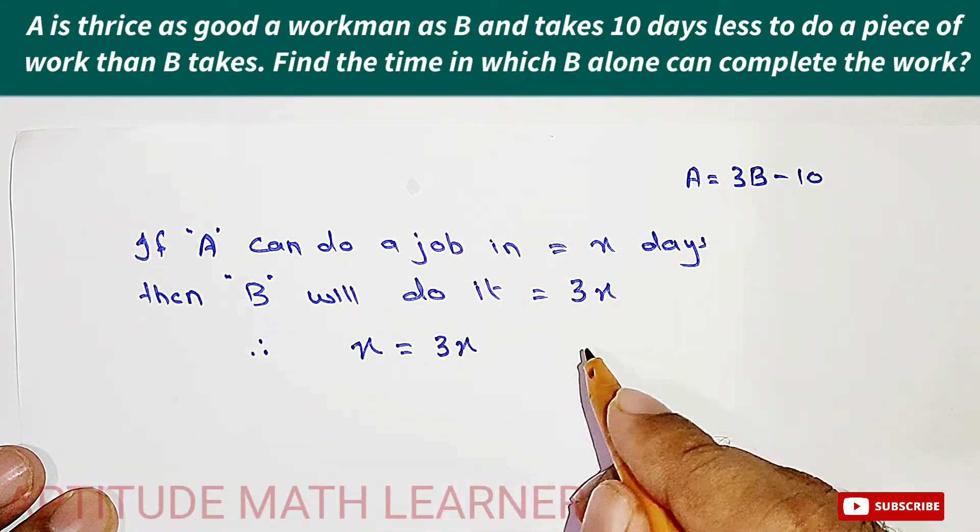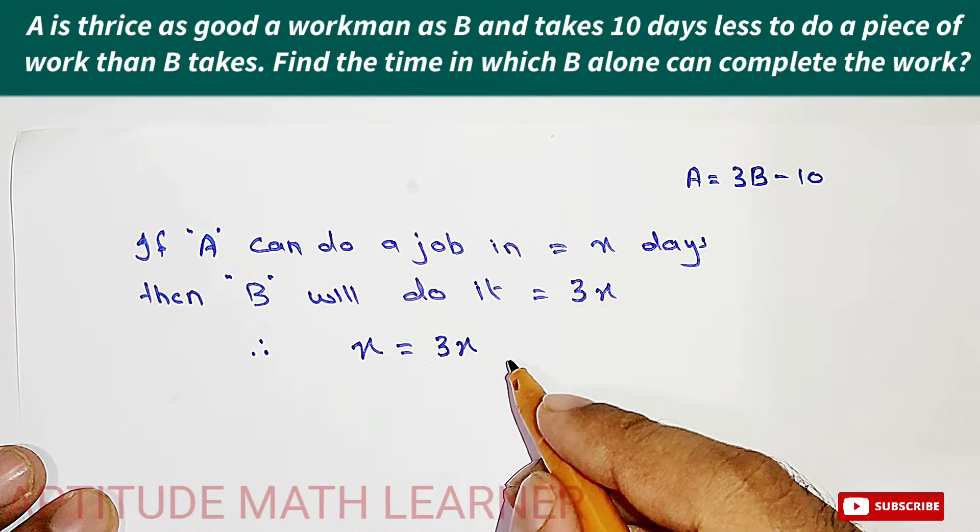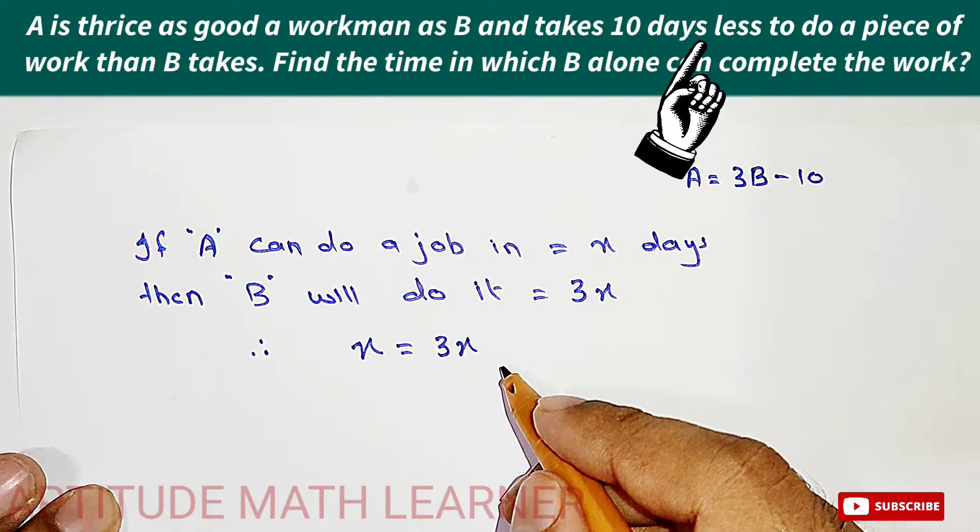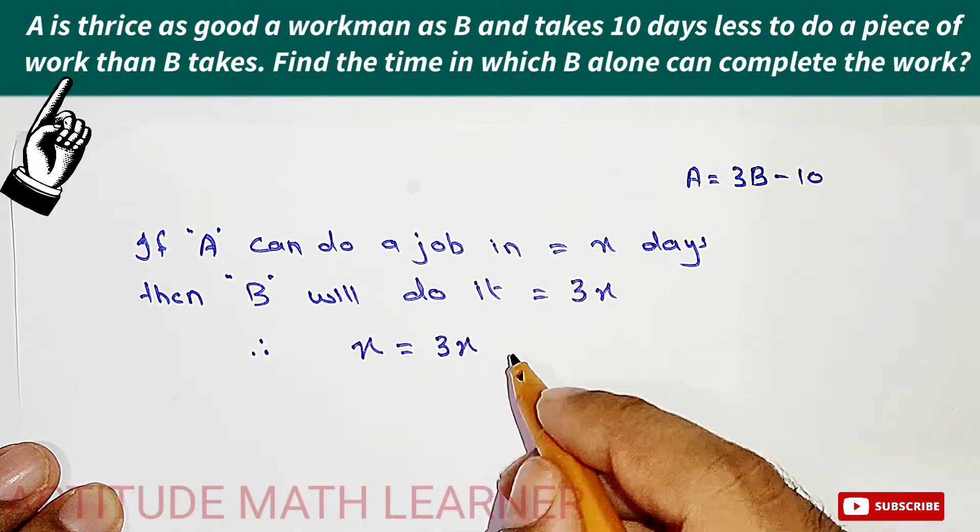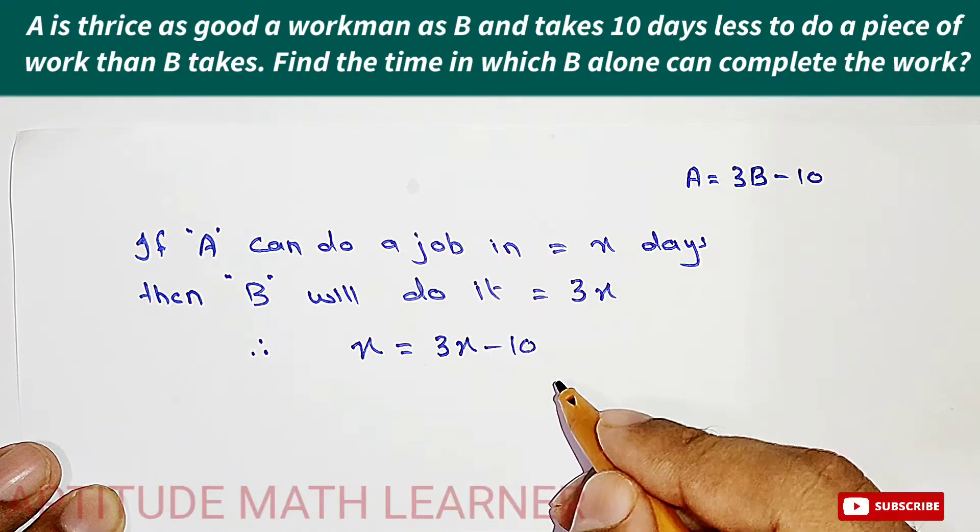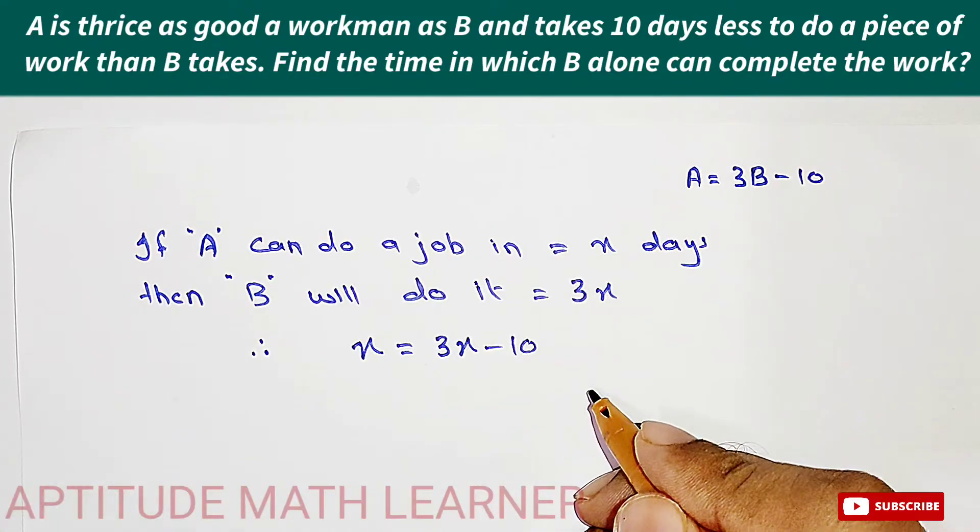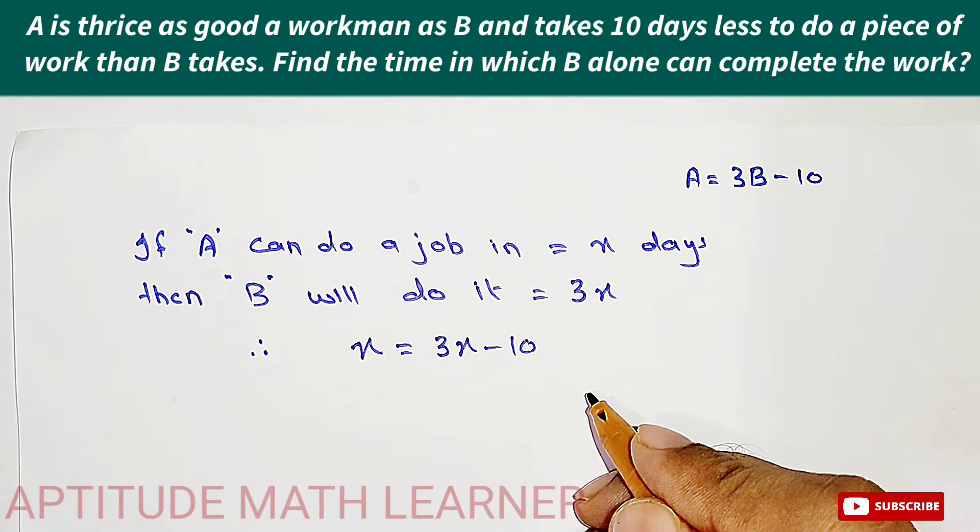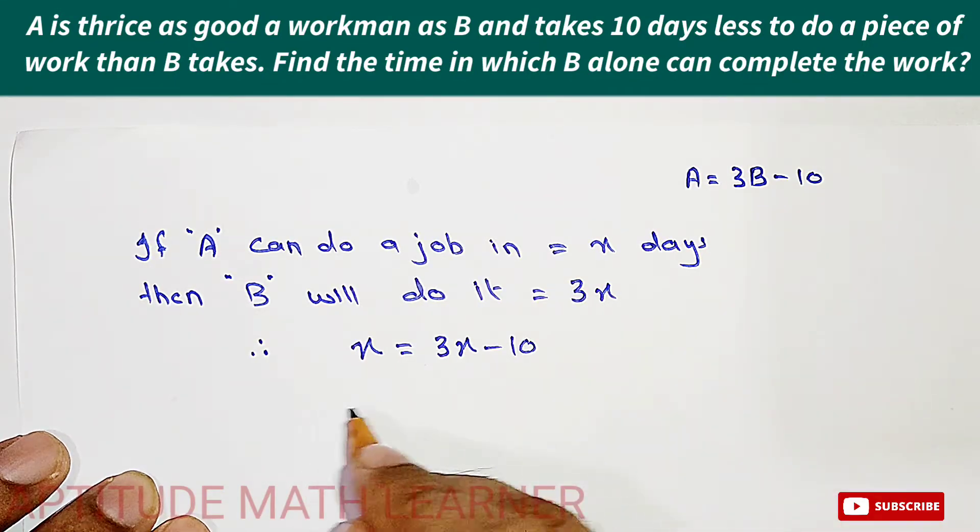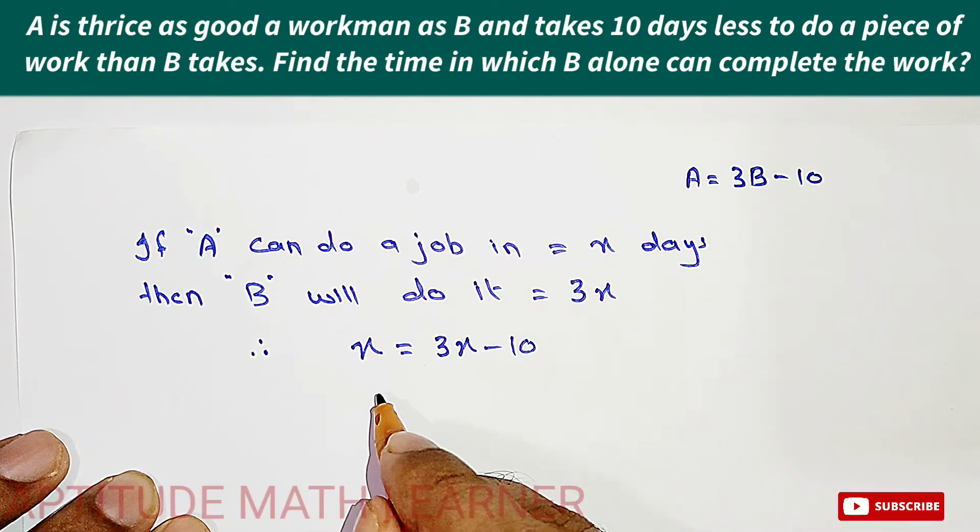So x is equal to 3x, and by how many days less he can complete the job? A takes 10 days less. So further solving we get...